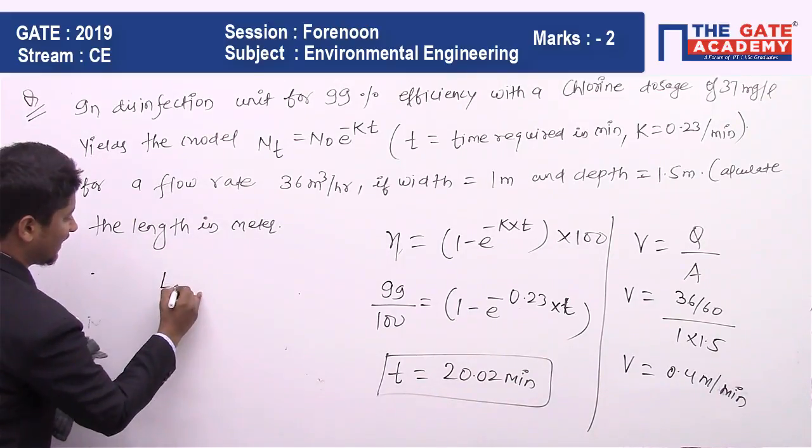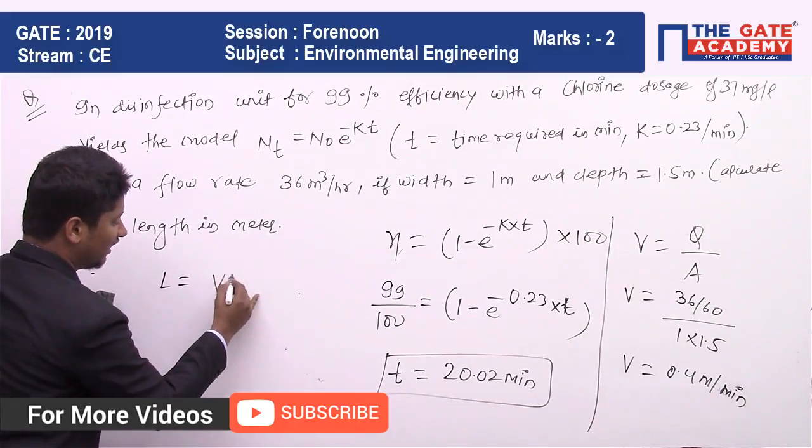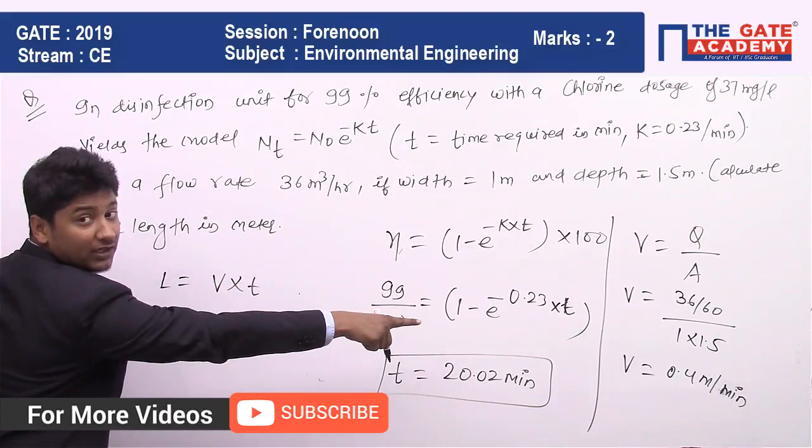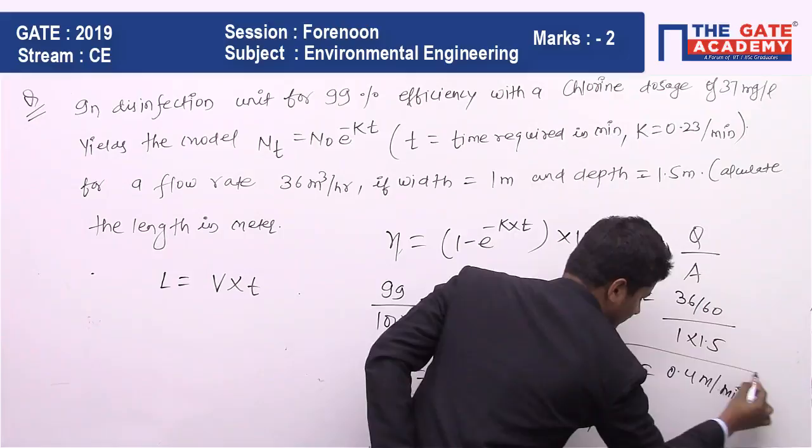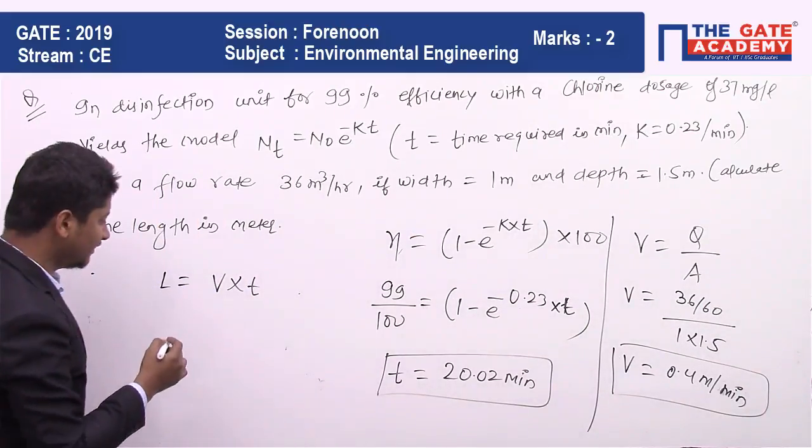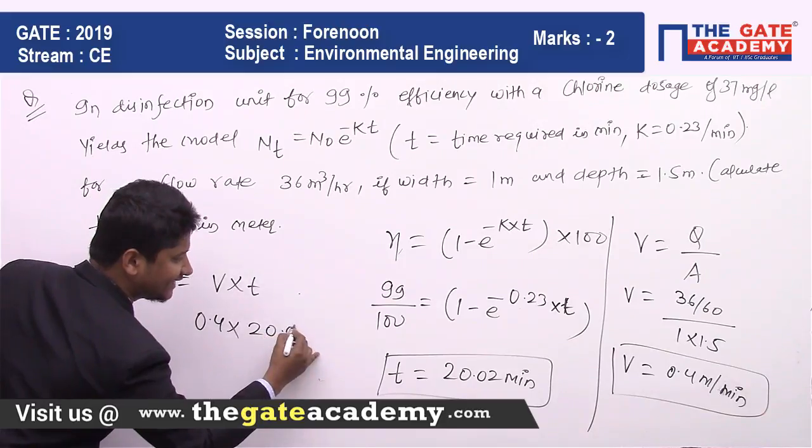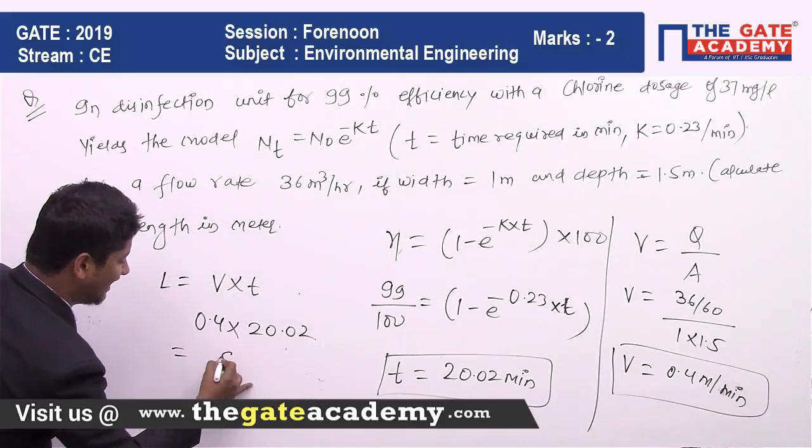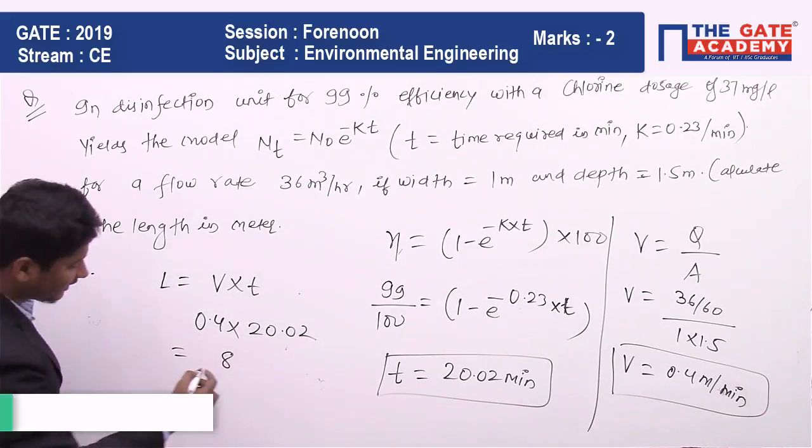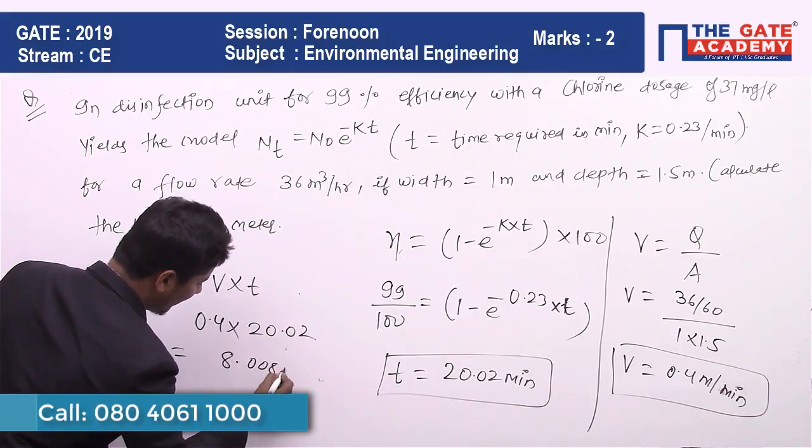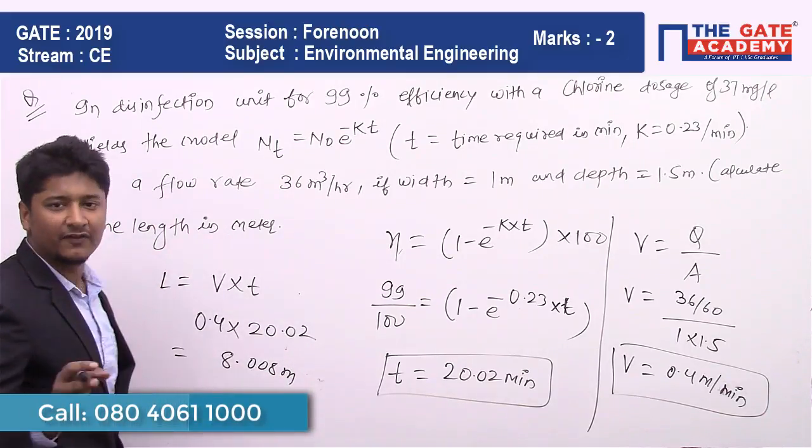So L is nothing but velocity into time. Velocity you got, that is 0.4 meter per minute. Time is 20.02. So finally, I think you are getting that is 8.008 meter, but 8 meter will be also okay.